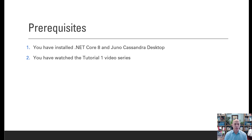Prerequisites for this video: we presume you have already installed .NET Core 8 and Juno Cassandra Desktop. If you haven't done so, there's a video we've made on installing Juno Cassandra Desktop — I'll put a link to that video in the description box below.